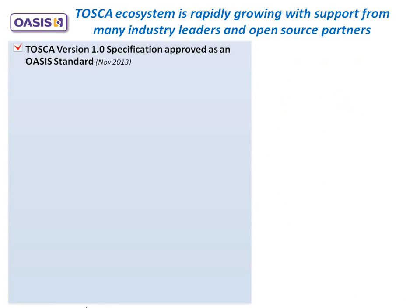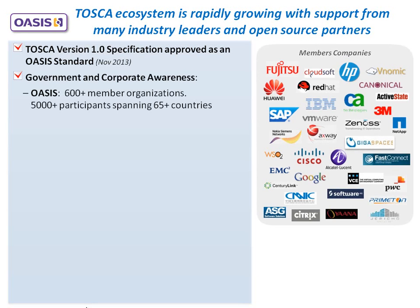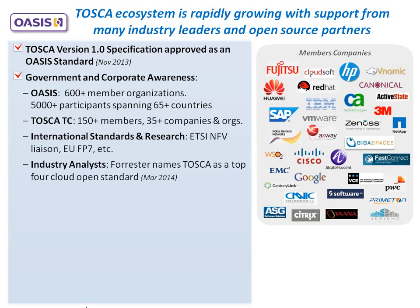Tosca version 1.0 has been an approved OASIS standard since November 2013 and is the basis for a growing ecosystem of industry leaders and open source partners. Further improvements are in the works, including enhanced interoperability, flexibility and capabilities, as well as support for new formats such as JSON and YAML that are critical for cloud platforms. As the Tosca ecosystem expands, the Tosca technical committee has grown to be one of the largest in OASIS, with broad representation of leading companies, governments and other worldwide organizations.